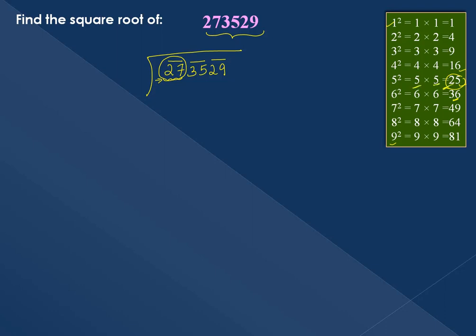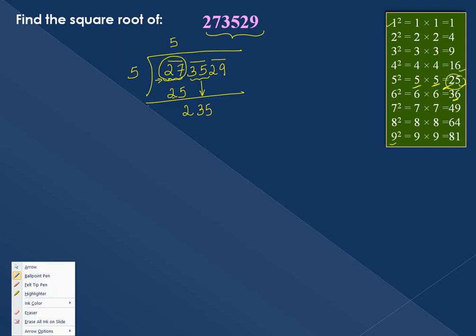5 multiplied by 5 is 25. Subtracting 25 from 27 gives us 2. Then we bring down the next pair, 35, making it 235.